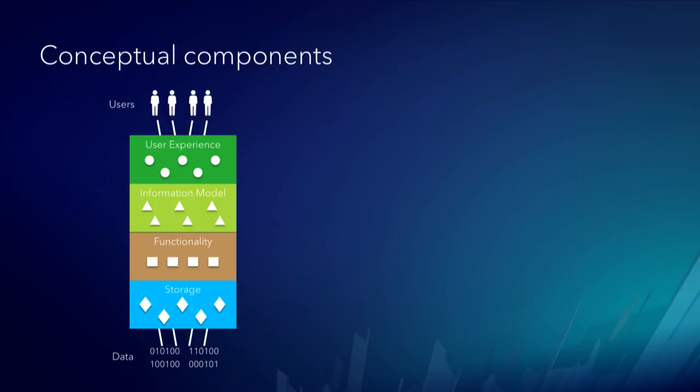If you think about this stack where you have data at the bottom and users at the top, ArcGIS has four main components. At the lowest level is storage — different types including files, databases, blob stores, NoSQL databases. On top of that is functionality: mapping, analysis, streaming, imagery, 3D — it turns the data into a function.